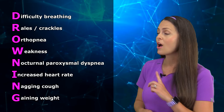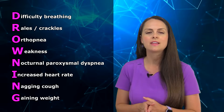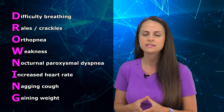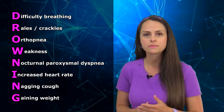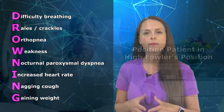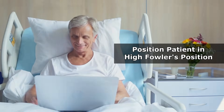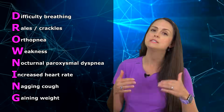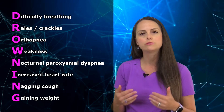Next is O for orthopnea. And this is whenever the patient lies flat in the supine position, they can't breathe, they start to smother. So they have to sit up to breathe easier. And this is really stemming back from that pulmonary edema that they're experiencing. So it's more helpful for the patient to be up in high Fowler's position to breathe easier. Plus, you want to dangle their feet at that bedside because what that's going to do is it's going to decrease venous blood return and help decrease that preload to the heart.